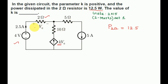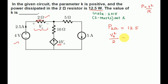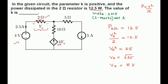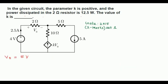It is also mentioned in the diagram that the voltage across this 2 ohm resistor is V0. So we can write power as P = V² / R. In this case: V0² / 2 = 12.5, which gives V0² = 25, and therefore V0 = 5 volts.